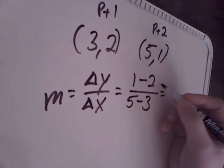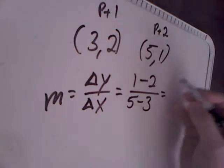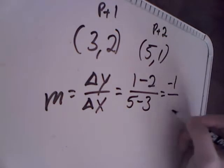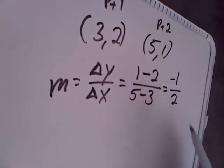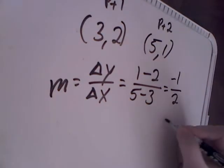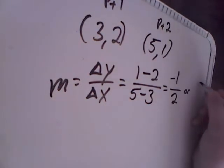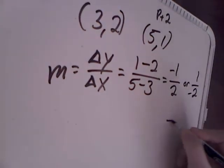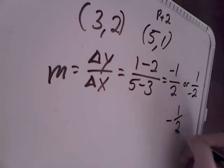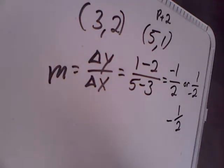1 minus 2 is the same as -1. 5 minus 3 is 2. So right now my slope is -1 over 2 or 1 over -2. What this basically means is you will see it written with the negative sign kind of ambiguous so you can't tell if it's on the upper or the lower side. They do that on purpose because it really doesn't matter where you put the negative sign when you're talking about slope as long as there's only one negative sign.